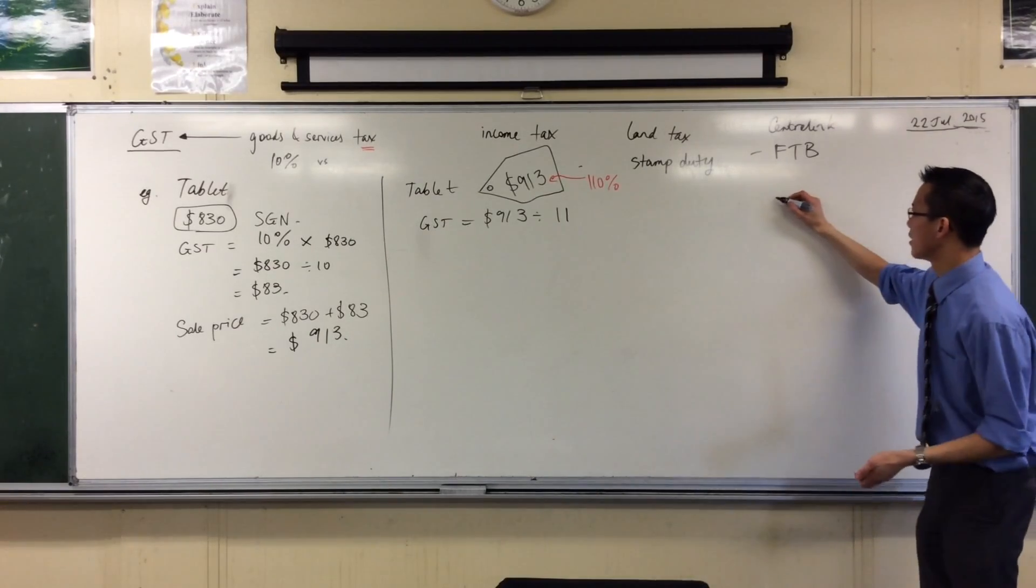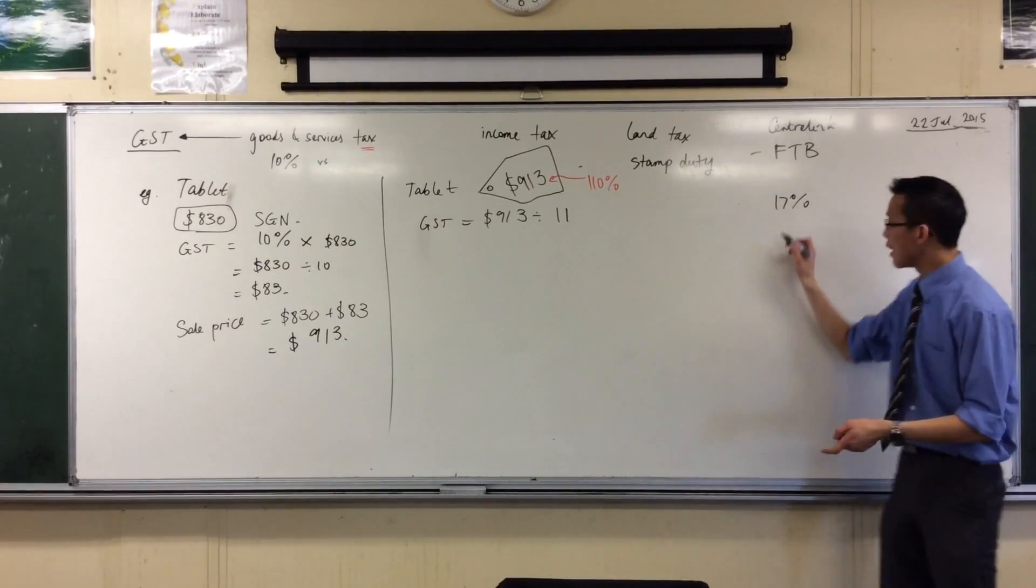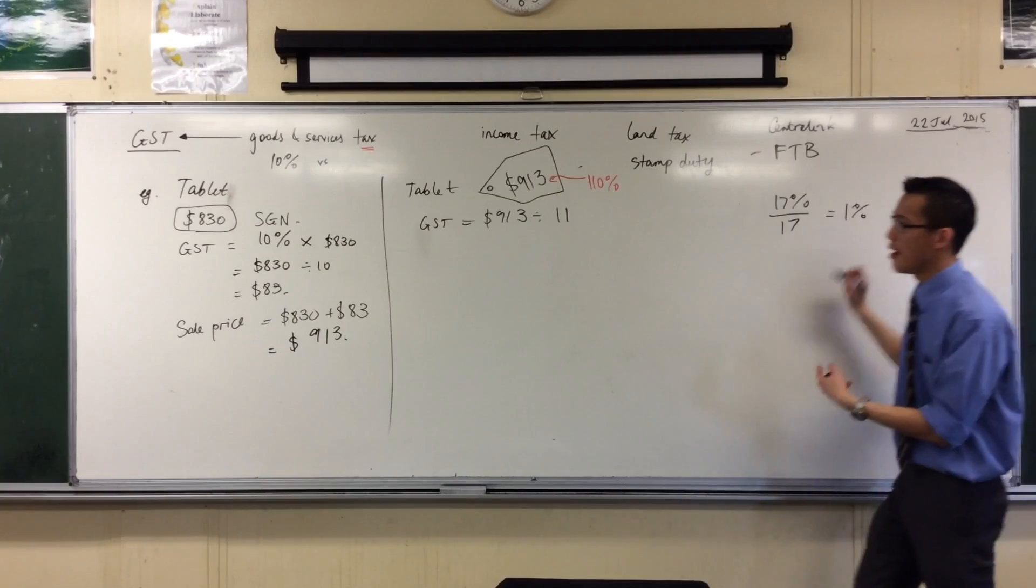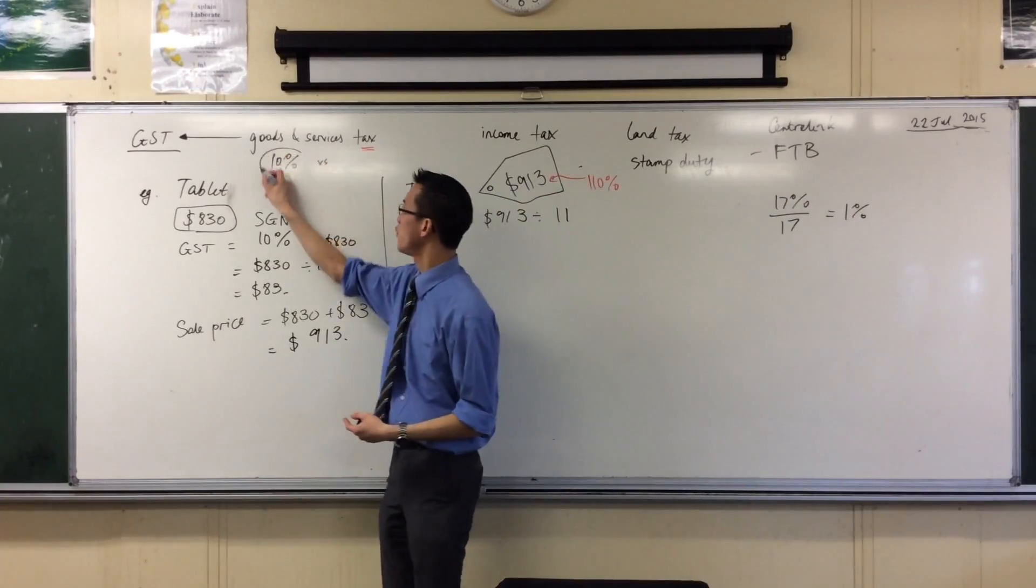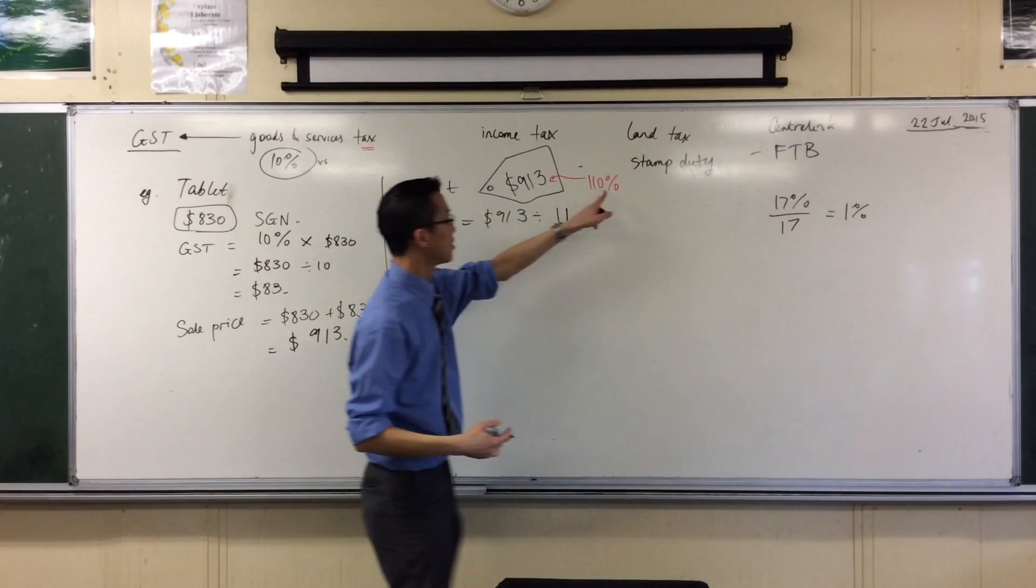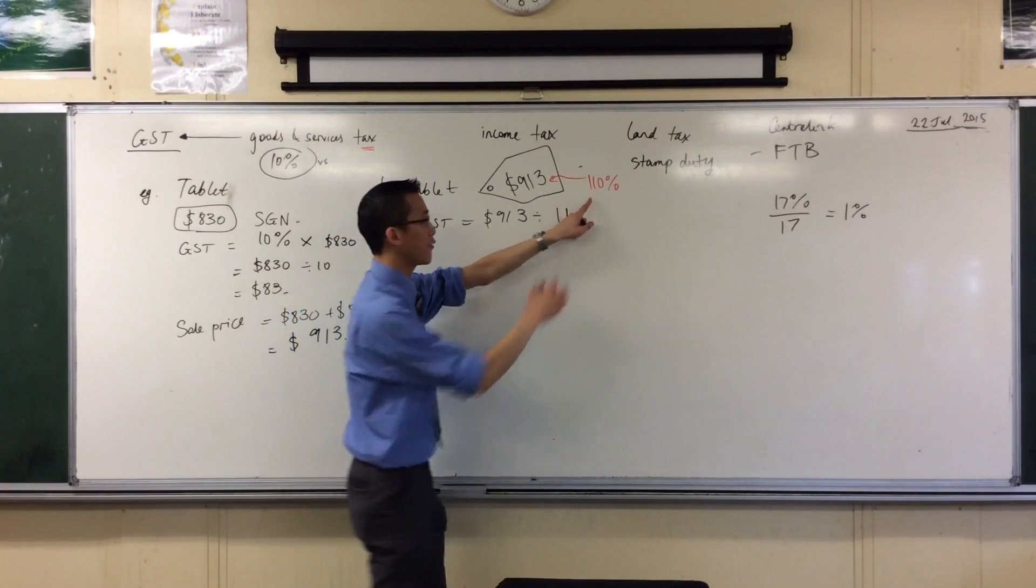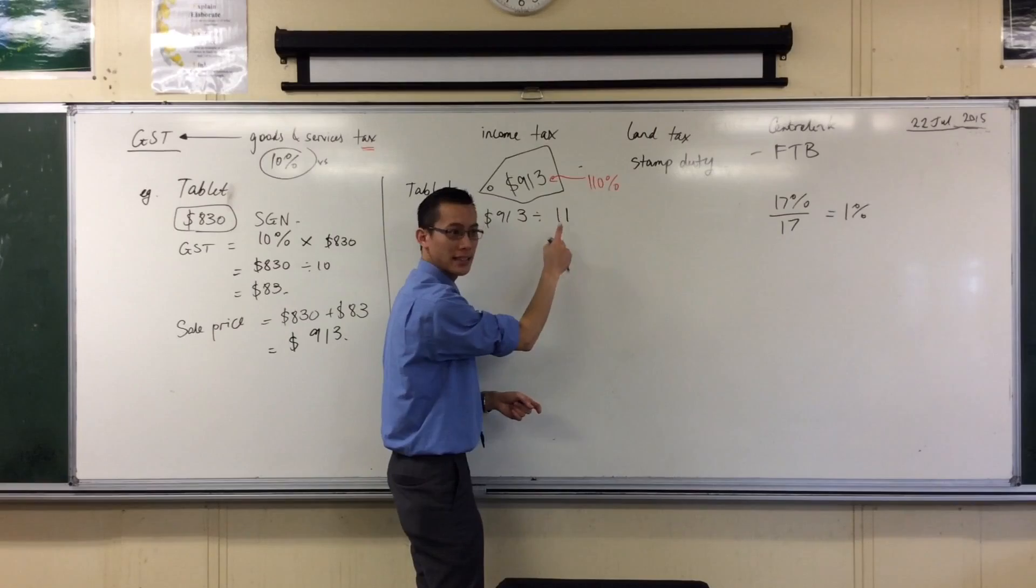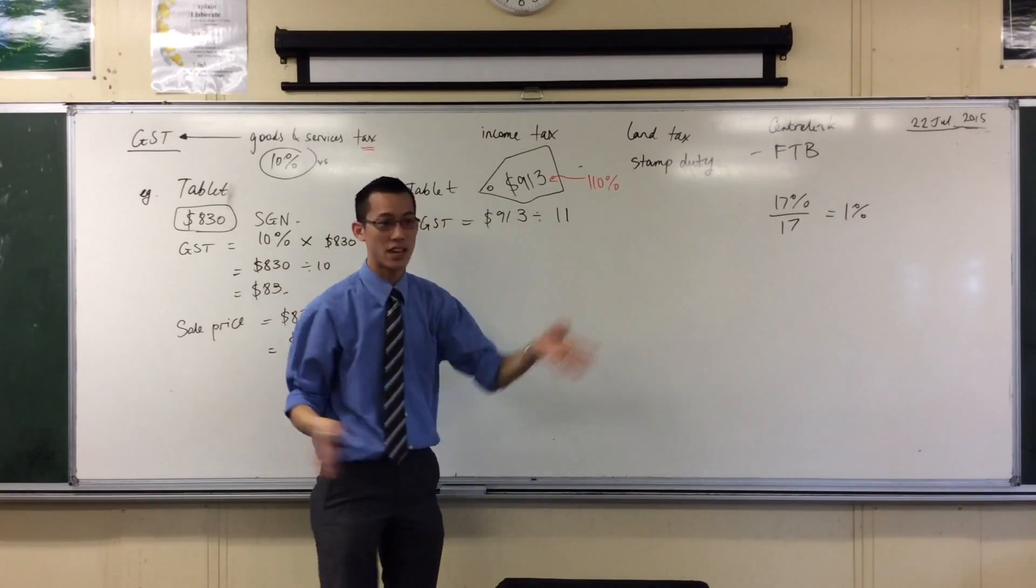If you've got, like, 17% of something, right? If you divide that by whatever number it is, you'll get 1%. Because GST is a specific percentage, I don't want 1, I want 10. So, to get from this to 10%, I should divide by 11. Does that make sense? 110 divided by 11, that'll give me 10%.